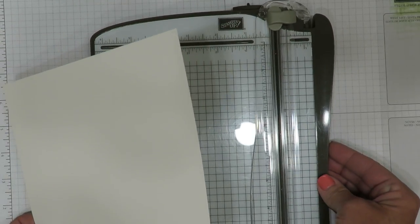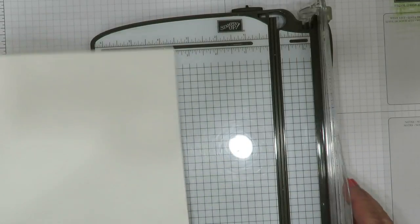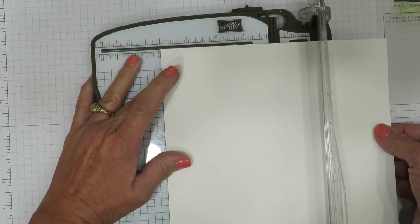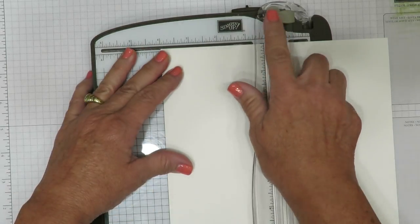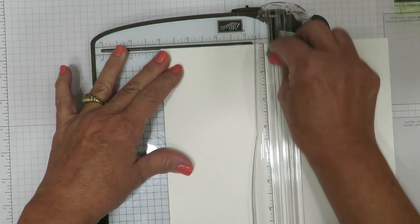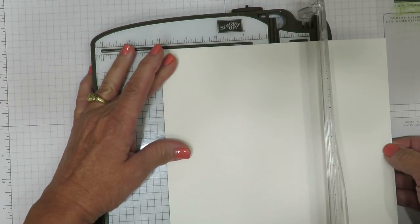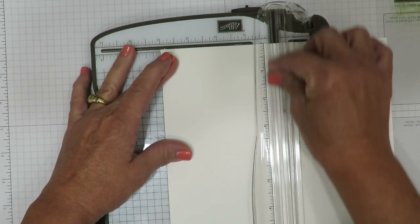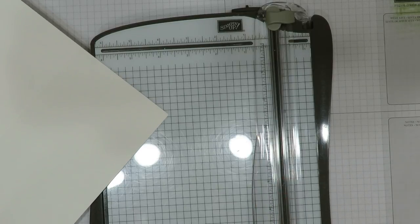You're going to be able to find all the cutting dimensions for today's project over on my blog. In the description bar below I've placed the link. This is an eight by eight inch piece of whisper white cardstock and I'm going to score it into four equal sections. So I'm going to score at four inches using the light blade on the paper trimmer. That's going to score the paper and then I'm going to turn it and do the exact same thing in the other direction.